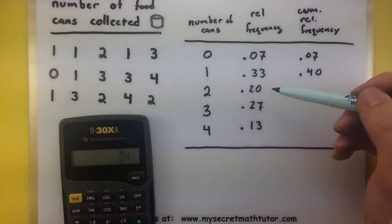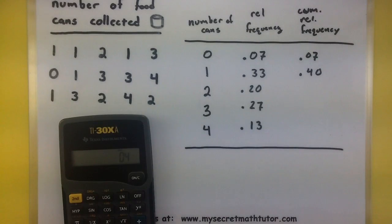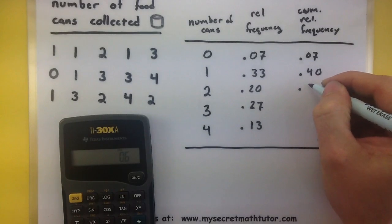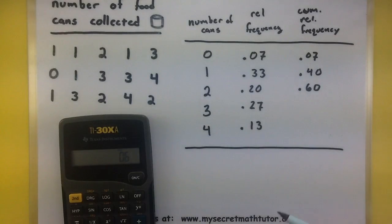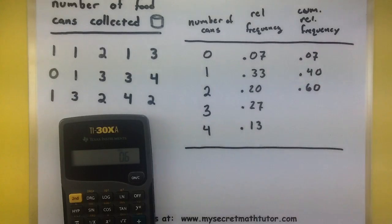For here, I want the total of .2 plus .33 plus .07. As you go along adding different values to your cumulative relative frequency, you can see that you're just adding everything up before that point.